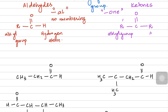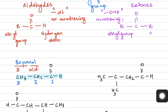Let's do some examples. The first structure — it's an aldehyde. We number from the aldehyde carbon: one, two, three. So it's going to be called propanal — 'prop' because it is a three-carbon compound and '-al' because it's an aldehyde. So it's propanal.